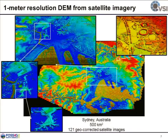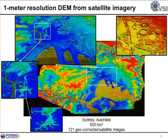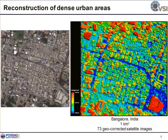One thing you may notice is the water — the ocean. Because of the scatter effect, we would never be able to reconstruct the water surface well. But luckily, because of openly available landscape data such as OpenStreetMap, we can easily mask out the water region from our DSM.